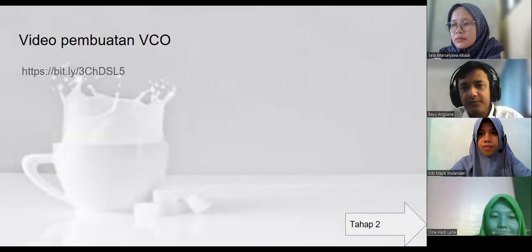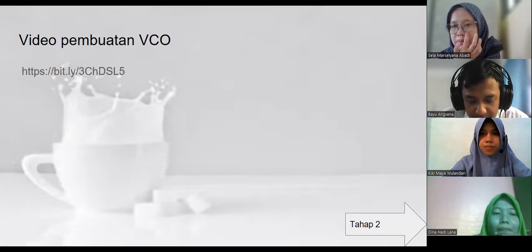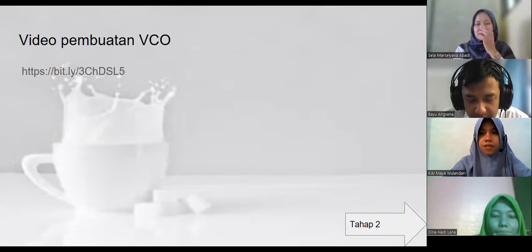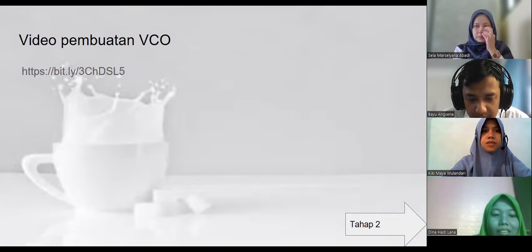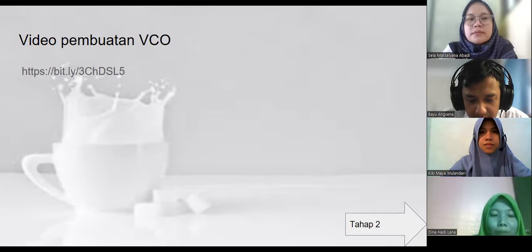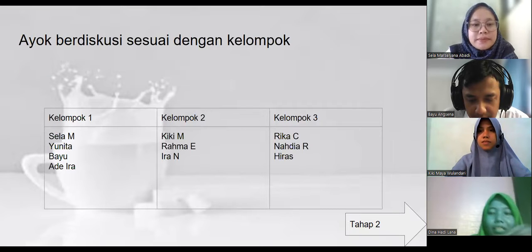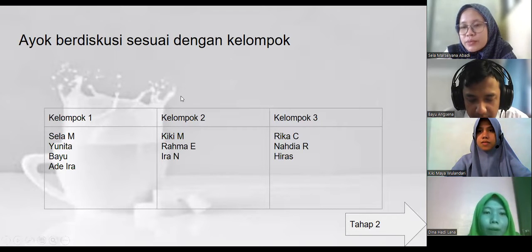Nanti anak-anak, walaupun tidak ada gambarnya di sini, bisa mencari melalui internet bagaimana cara membuat VCO. VCO adalah singkatan dari Virgin Coconut Oil — jadi kita nanti akan membuat minyak kelapa. Anak-anak bisa mencarinya dari sumber-sumber yang ada, misalnya dari internet atau dari buku ajar. Di sini Ibu bagi sesuai dengan kelompok — terdapat tiga kelompok.